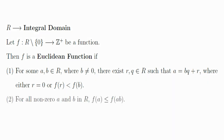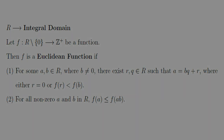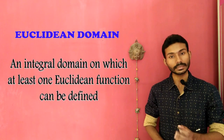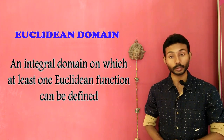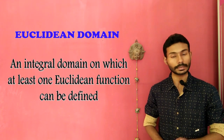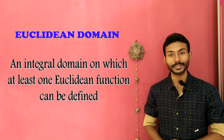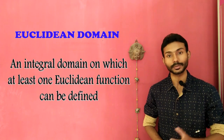And second, for all non-zero elements A and B in R, the value of the function at the point A is less than or equal to the value of the function at the point A times B. An integral domain on which we can define at least one Euclidean function is called a Euclidean domain.